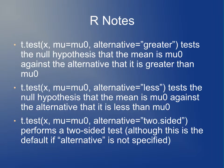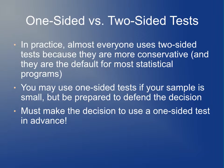In general in R, you do t.test(x, mu = mu0, alternative = "greater") or alternative = "less" to test against those one-sided alternatives. You can also say alternative = "two.sided", but that's the default in R — if you don't specify the alternative, it's assumed to be two-sided. In practice, almost everyone uses two-sided tests because they're more conservative, they're the default for most statistical programs, and a surprising number of scientific journals explicitly require two-sided tests. My personal preference is to always do two-sided tests to avoid having to justify why you didn't.